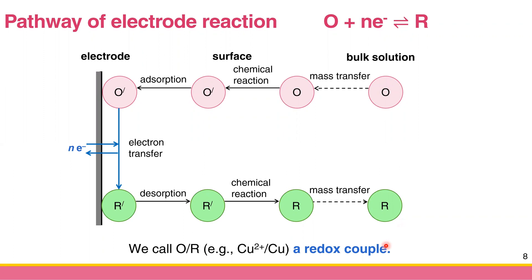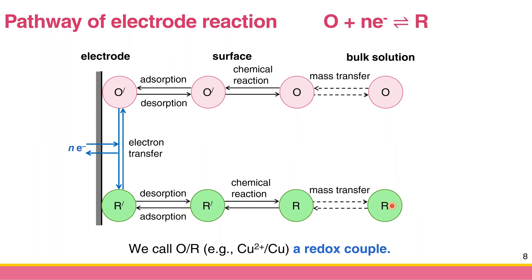We call this pair a redox couple — for example, Cu²⁺/Cu. Your species must undergo mass transfer, chemical reaction, and adsorption before exchanging electrons at the electrode. After converting to R, it undergoes desorption, chemical reaction, and mass transfer back. If the redox couple is reversible, R can also give electrons back to the electrode to be oxidized back to the original form. This is the full pathway of the electrode reaction.